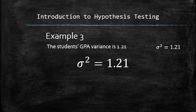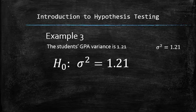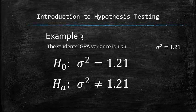In this example, the claim is in the form of an equation. Therefore, it must be stated as a null hypothesis. Therefore, the alternative hypothesis must be chosen in the form of an inequality. Which one? It depends on the context of the problem. When there is no context provided, it is safe to set it up as sigma squared is not equal to 1.21 and the test is two tail.